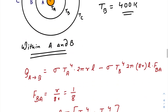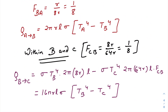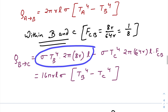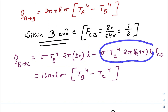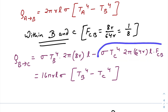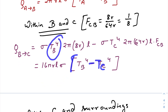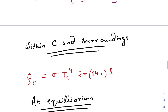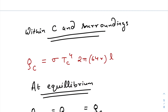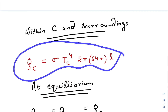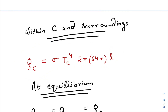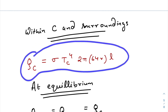Similarly for B and C, the view factor is also 1/8. The energy emitted by cylinder B minus the energy from cylinder C times the view factor gives the total energy received by cylinder B. Calculating this gives 16πrLσ(T_B⁴ − T_C⁴). For C and the surroundings, since the surrounding temperature is not given, the energy emission from cylinder C is σT_C⁴ · 64rL.